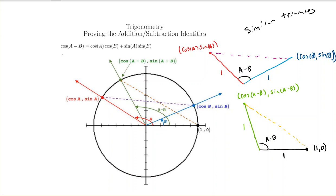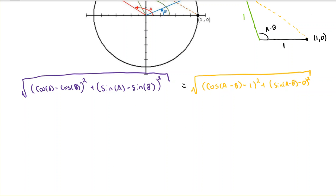I've labeled the coordinates in the plane of the endpoints for the purple and gold segments. Since they're both the same length, I can apply the distance formula to find the length of each segment. I've done this here — I have two square roots, these radicals, that should be equal. Since they're equal, their squares should be equal, so I can eliminate the square roots and set what's inside them equal to each other.